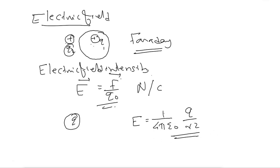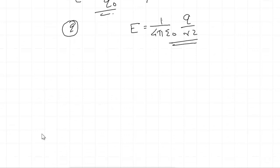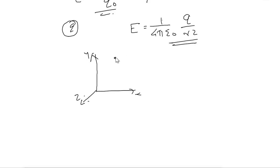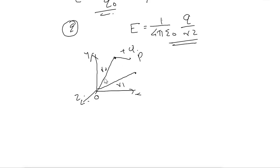If instead of one charge there are n number of charges, how do we find the electric field? We find it using the sum of contributions from all charges. Consider two charges on x-y-z axes: a charge plus q at point A and another charge at point B, with O as the origin. Point A is at distance r1 and point B is at distance r2. We need to find the electric field at point P.